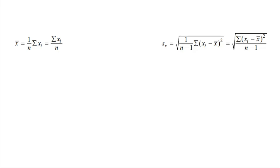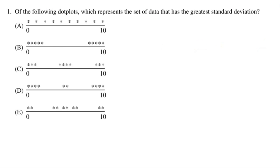This first question says: of the following dot plots, which represents the set of data that has the greatest standard deviation? The first thing we have to understand is the definition of standard deviation — it's how far typical data is from the mean. All of these dot plots are symmetric, so the mean is going to be right smack dab in the middle. We're looking for the one that has the most points that are far from the mean.